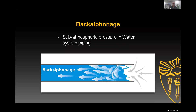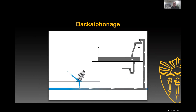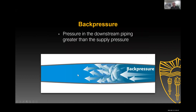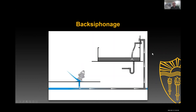There's back siphonage and back pressure. With back siphonage, water normally flows from left to right but is being sucked from right to left. That's defined as when we get sub-atmospheric pressure in the distribution piping — below 0 PSIG or below 14.7 PSI, below atmospheric pressure. Back siphonage occurs when we lose pressure in the distribution system, and as water pulls down, it creates a sub-atmospheric pressure, drawing flow backward.